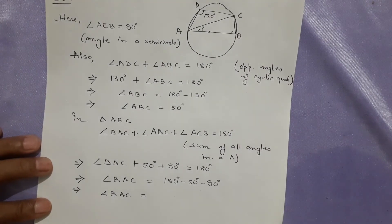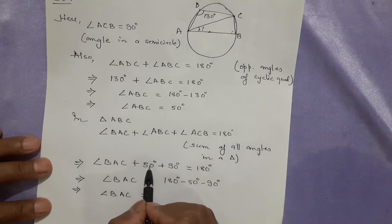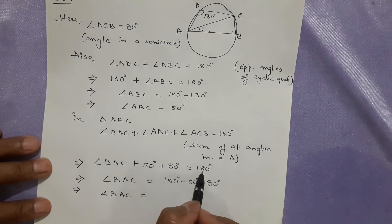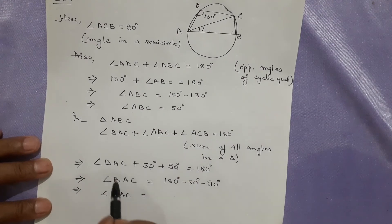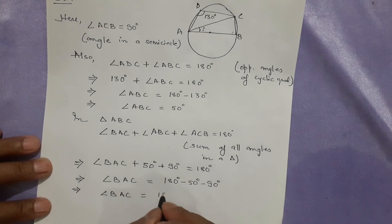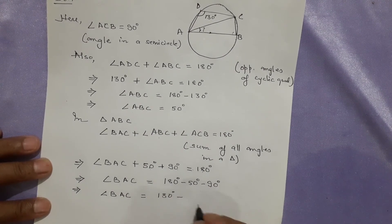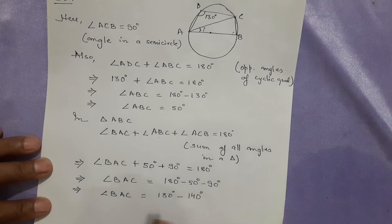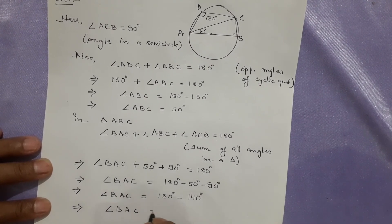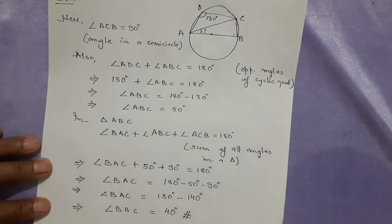So angle BAC + 50° + 90° = 180°. Transfer these to the other side: 180° - 50° - 90°. If you add them together, 50 + 90 = 140°. This gives angle BAC = 180° - 140° = 40°. This is your answer. Thank you.